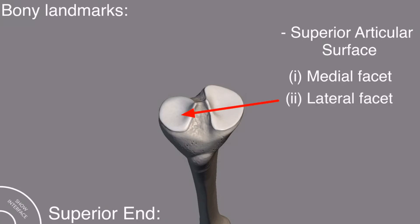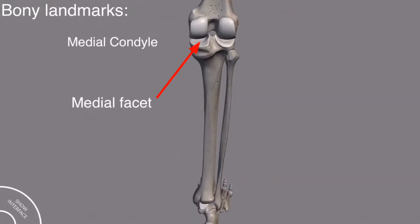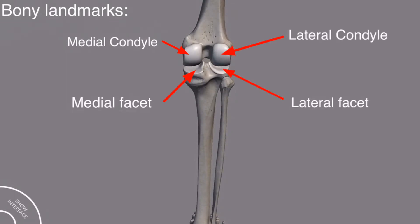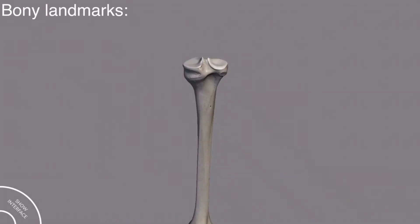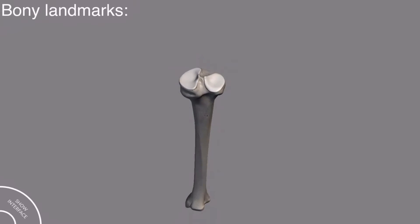The medial facet is more broad than the lateral one. The medial facet articulates with the medial condyle of the femur bone, while the lateral facet articulates with the lateral condyle of the femur. It is clear from the picture that the medial facet is present on the superior surface of the medial condyle, while the lateral facet is present on the superior surface of the lateral condyle.